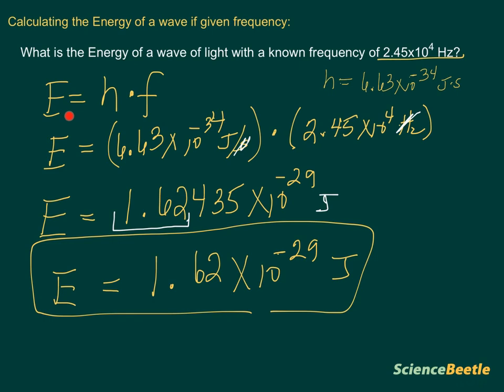The one that's a little bit more complicated because it requires an additional step is going to be the one where we're trying to find the energy of a wave in which we're given the wavelength. And that's the problem we'll do next.